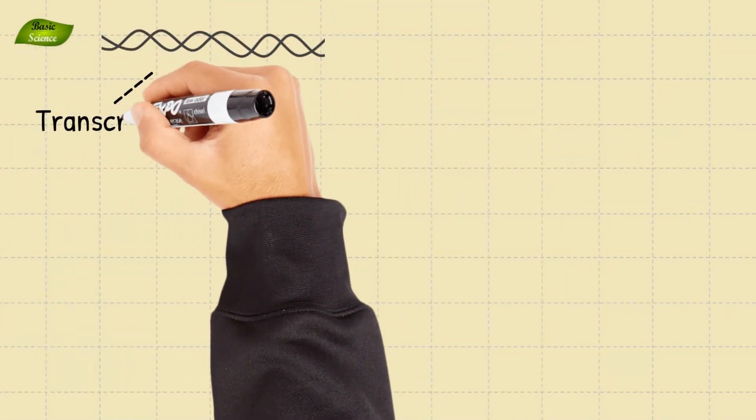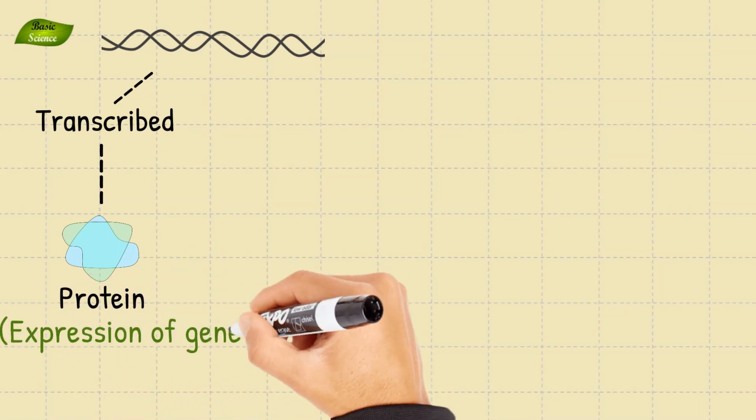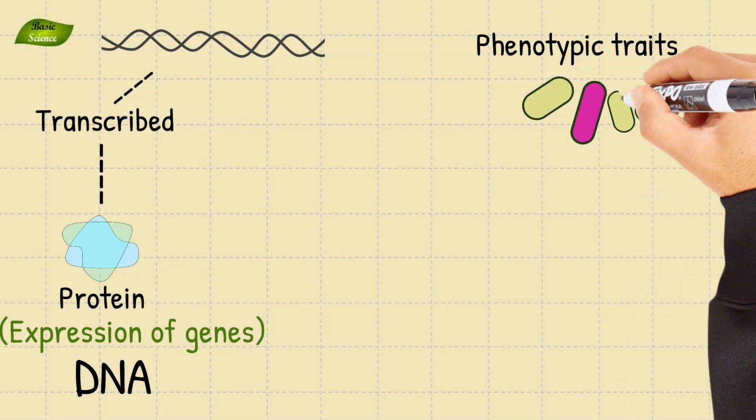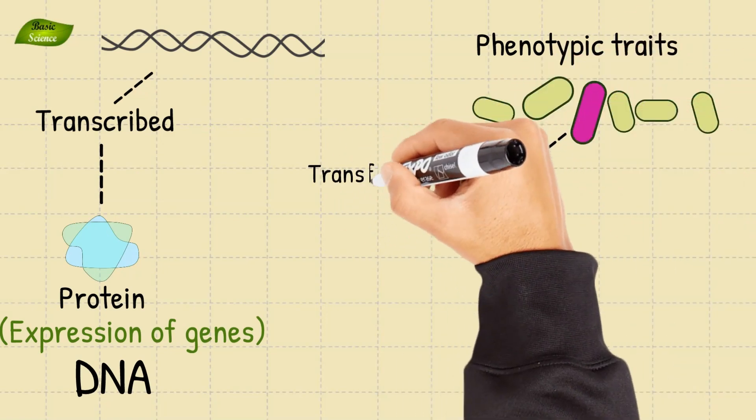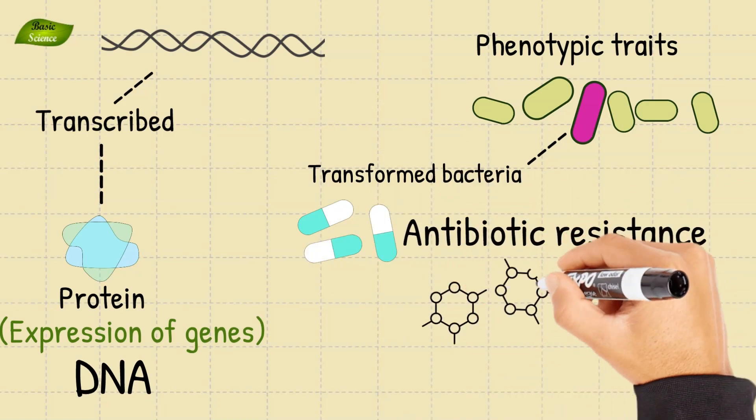Subsequently, the integrated DNA is transcribed and translated, leading to the expression of genes carried by the acquired DNA. This may confer new phenotypic traits to transformed bacteria such as antibiotic resistance or the ability to metabolize novel substrates.